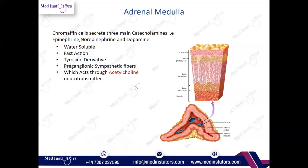In the exam, they may ask which neurotransmitter is present in the adrenal medulla or which is responsible for catecholamine production there. The answer is acetylcholine. The preganglionic sympathetic fibers release acetylcholine in the adrenal medulla, and as a result, chromaffin cells produce epinephrine, norepinephrine, and dopamine — which are derivatives of tyrosine.